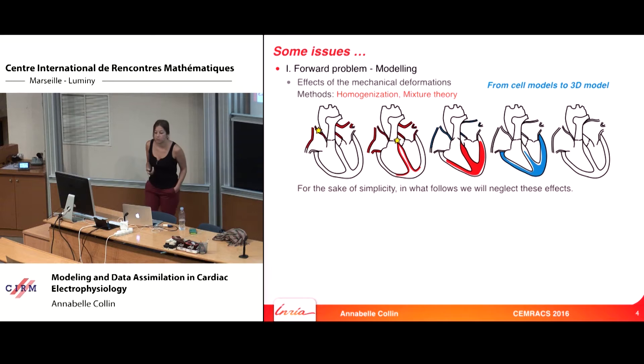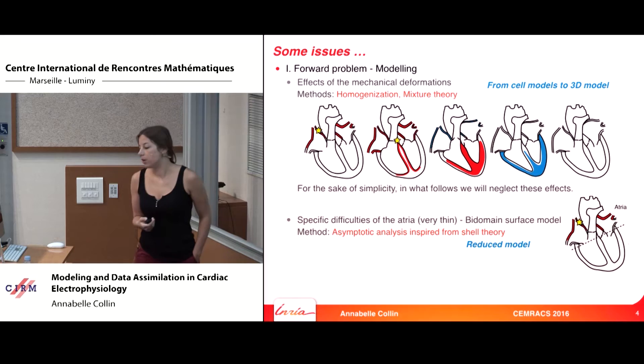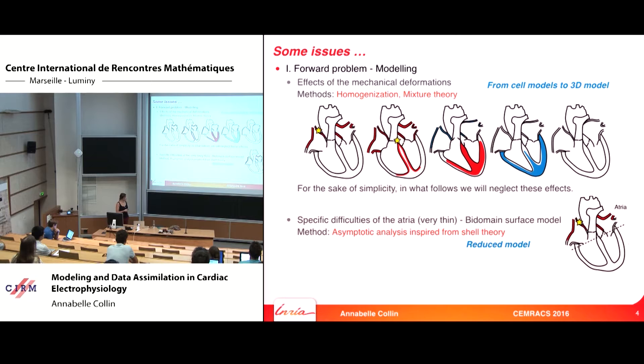For the sake of simplicity, we will neglect this mechanical effect in this work. Another issue in modeling is the particularity of the atria — the superior part of the heart. The atria are very thin, and that is why we want to derive a bidomain surface model using asymptotic analysis. This will be the first part of my talk.